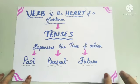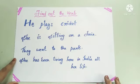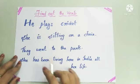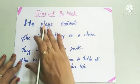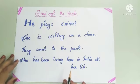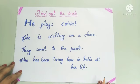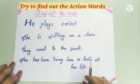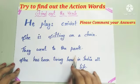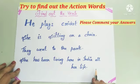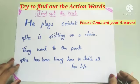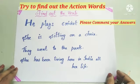So let's have a look at a few sentences where you have to find out the verb. 'He plays cricket' — find the action word. If you say 'he cricket,' it doesn't give any meaning. 'She is sitting on a chair' — find the action word. 'They went to the park.' 'She has been living here in India all her life.' Find the verbs in these sentences.